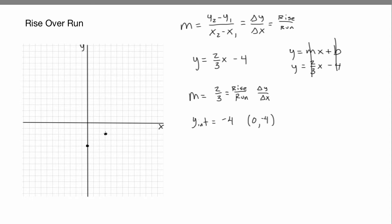From this new point, we go up 2 — 1, 2 — and run 3 — 1, 2, 3 — and draw another point. Then go up 2 and run 3 again. I'm going to draw the line. And that's about right — there it is. You can do these fairly quickly as long as you know where one of the points is located on the line.